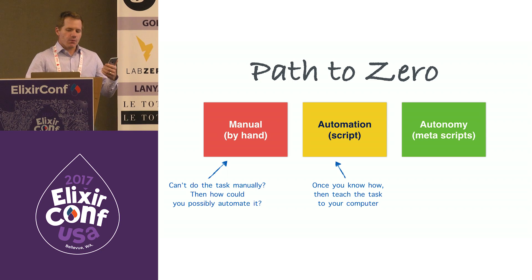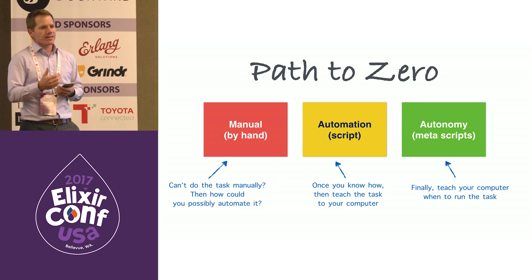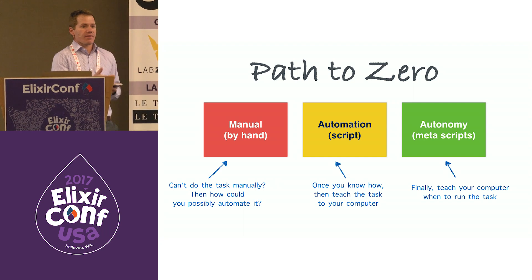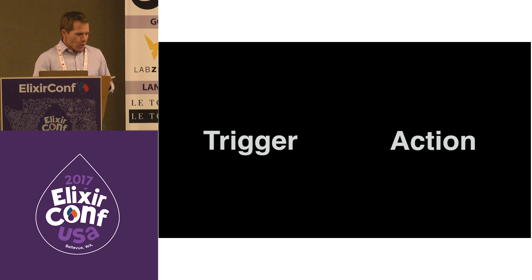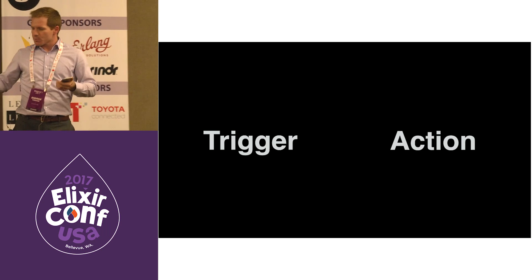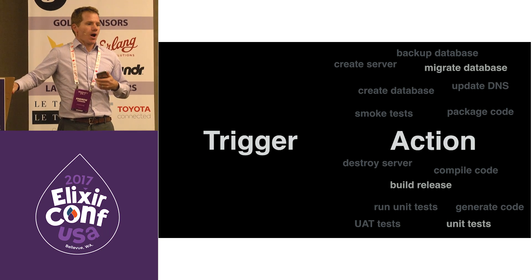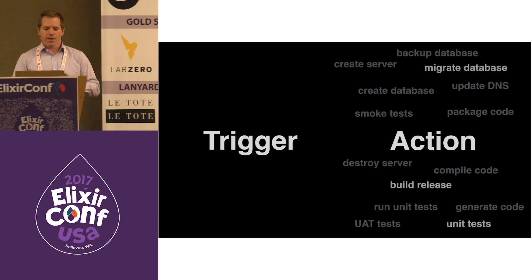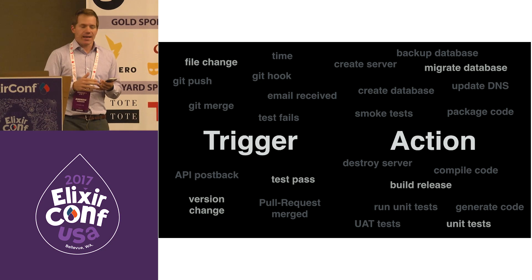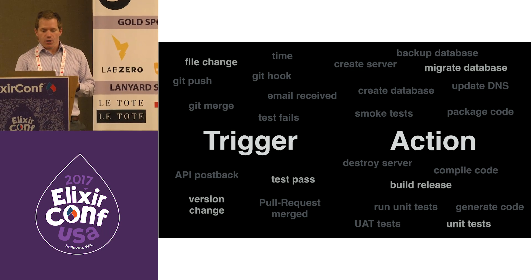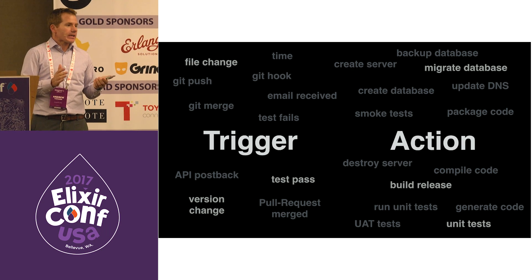You're teaching the computer when to run the tasks and how to react when they fail. You're splitting your automation into two parts: the first part is the actions — things like mix ecto migrate, mix test, backing up your database in Postgres, running smoke tests. The triggers are looking for file changes, getting postbacks from third-party services, integrating with Git hooks, getting a version change if a PR is merged. Triggers have only one responsibility: to kick off those actions.